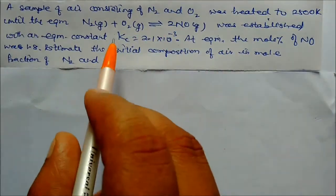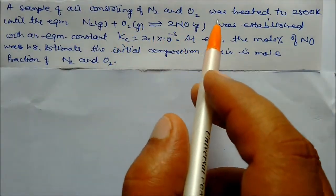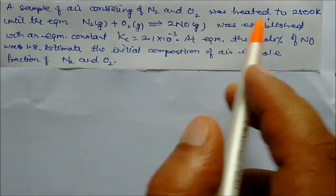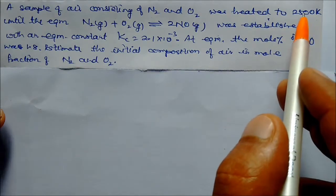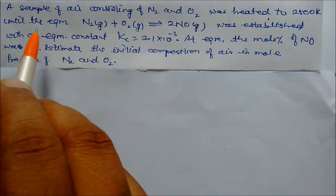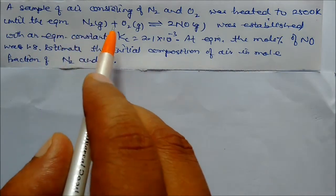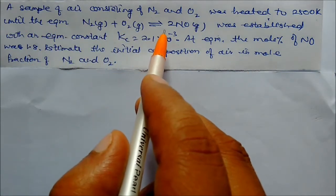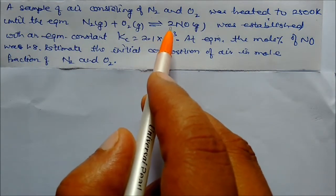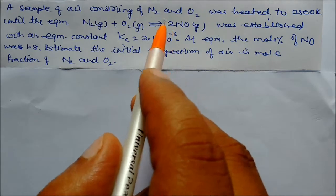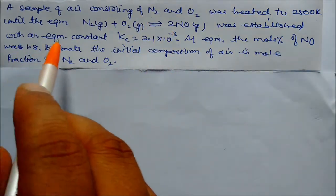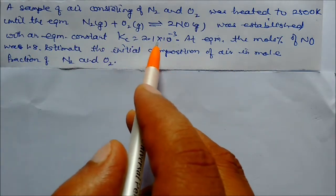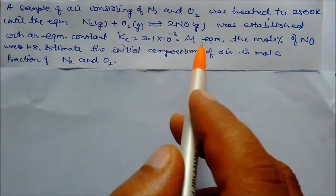A sample of air consisting of nitrogen and oxygen was heated to 2500 Kelvin until equilibrium N₂ + O₂ ⇌ 2NO was established with equilibrium constant Kc = 2.1 × 10⁻³.